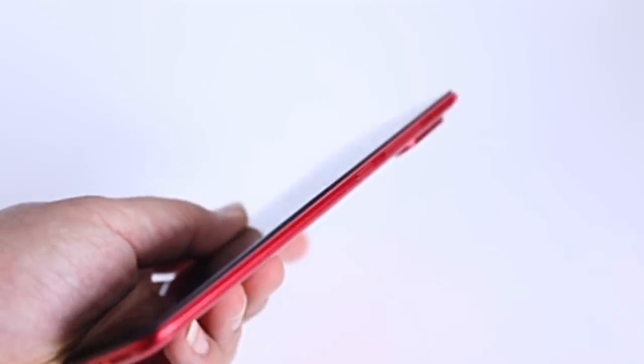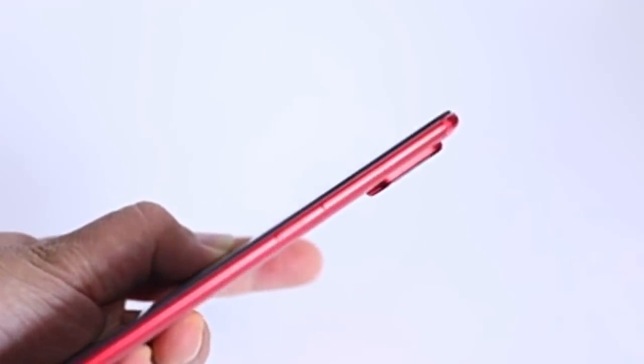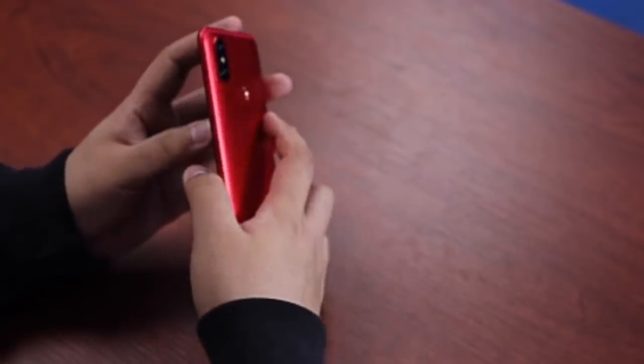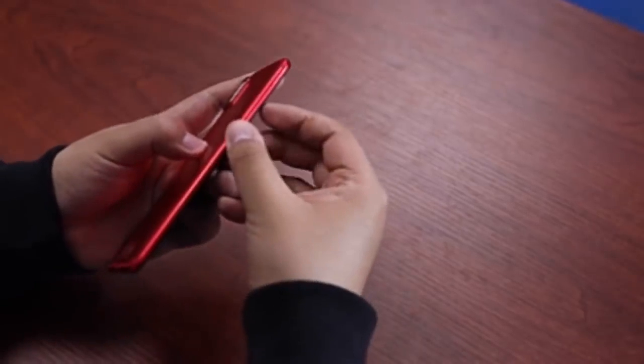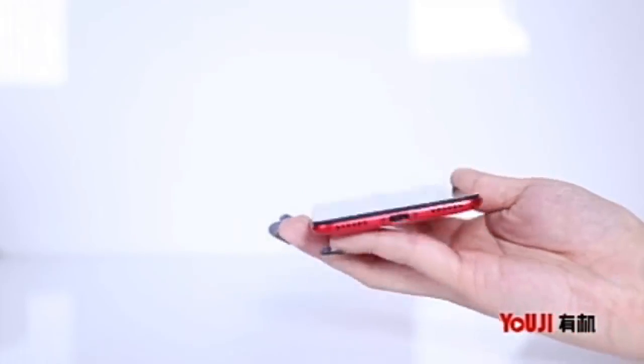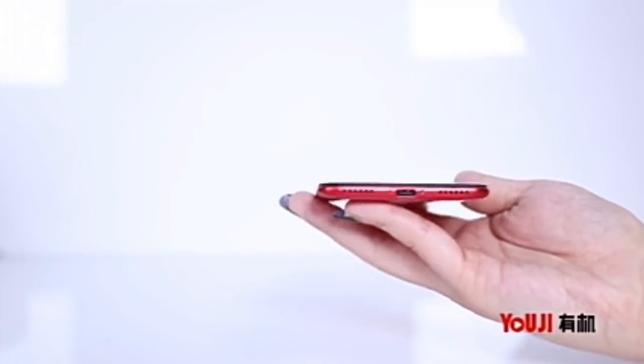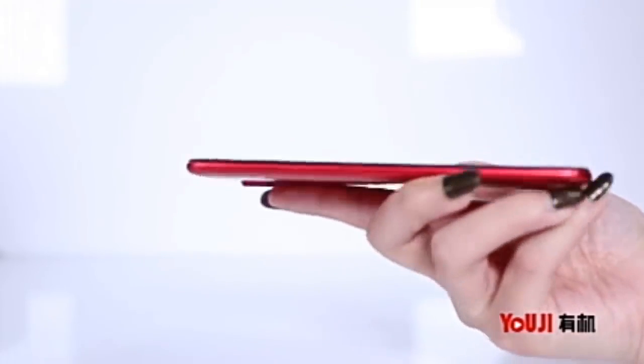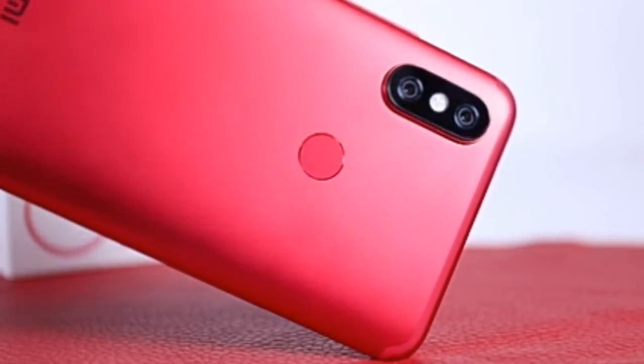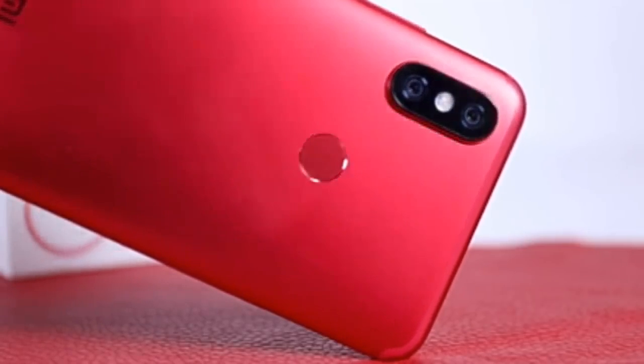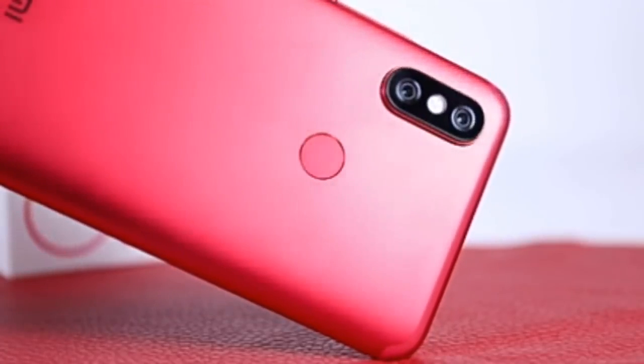The dual camera setup present on the back panel of the Mi 6X includes an f/1.75 aperture Sony IMX486 sensor with a pixel size of 1.25 micron, and a secondary 20 megapixel sensor that features an f/1.75 aperture Sony IMX376 sensor with a pixel size of 2 micron. The secondary sensor is a telephoto lens that offers 2x lossless zoom.